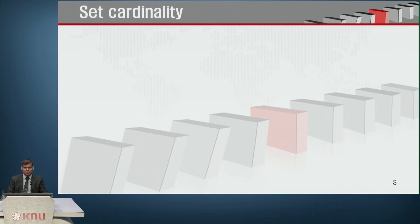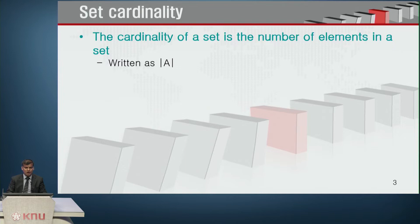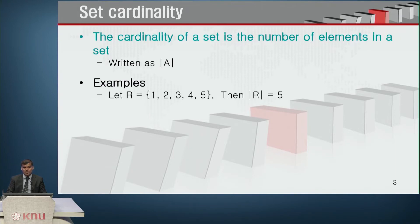Let us see more properties. A set cardinality — what is the cardinality of a set? Cardinality of a set is the number of elements in a set; it is that simple. If you are asked to find the cardinality of a set, you just count how many elements are there, and you represent it by means of this symbol, which looks like the absolute value symbol. For example, let R equal {1, 2, 3, 4, 5}, then the cardinality of R is 5. The cardinality of the empty set is 0, because it does not contain any element.